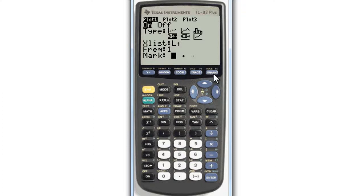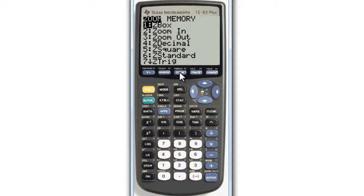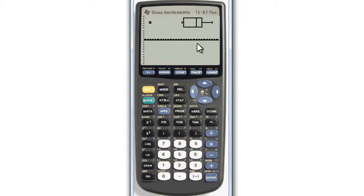Now press GRAPH, and we can't see it. That's because we need to go ZOOM, which is this button here, and select STAT. You could either press number 9, or press UP twice to get to ZOOM STAT. And there we have our box plot.